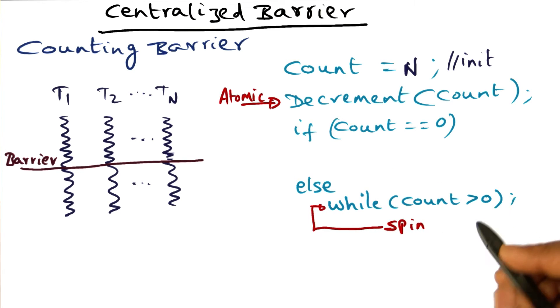They're going to spin, and the spin is basically saying: while count is greater than zero, spin. All the processors, except the last one, are going to be doing this spinning on count becoming zero.